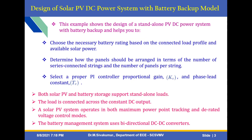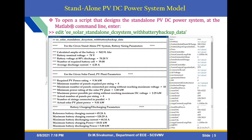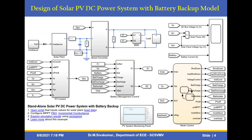This is the Simulink model of this example. To get this example, type in the MATLAB command prompt the command to open a script that designs a standalone PV DC power system. In the command prompt, type 'EE solar standalone DC system with battery backup'. If that command is not available in your version, in the description box we will provide a Simulink SLX file. Based on the XLS file, you can install and open it using your MATLAB software, and the Simulink file will open.